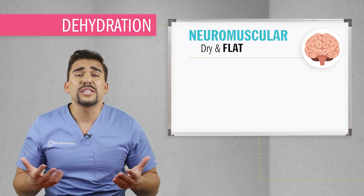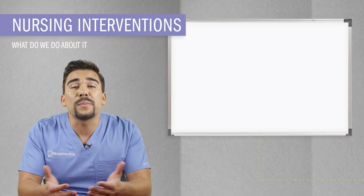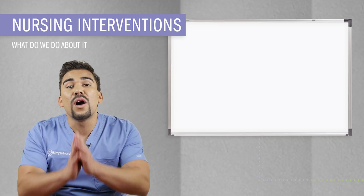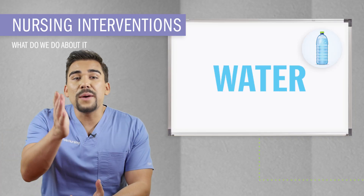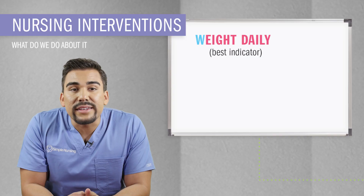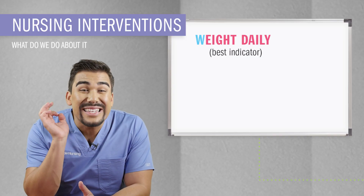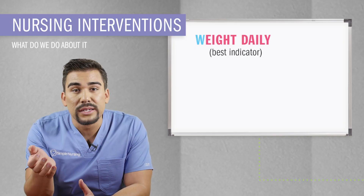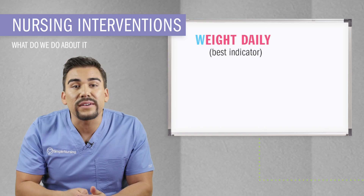Last but not least, neuromuscularly the patient will be dry and flat. Now that we know what's going on, what are we going to do about it? Here are some priority nursing interventions. We revolve all interventions around helping the patient get back to normal — in this scenario, helping the patient get more fluids. We use the acronym WATER. W is for weight daily — daily weights are usually the best indicator to monitor if the patient is gaining or losing fluids.